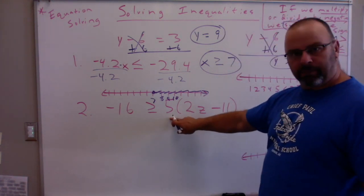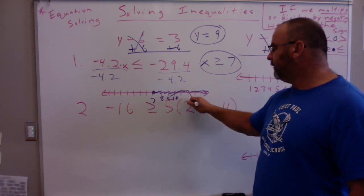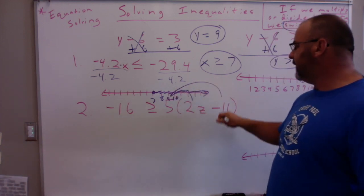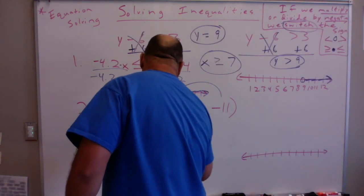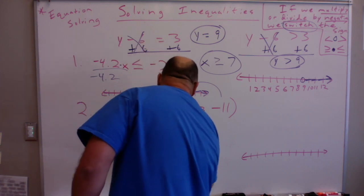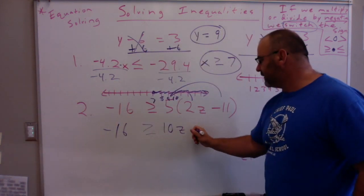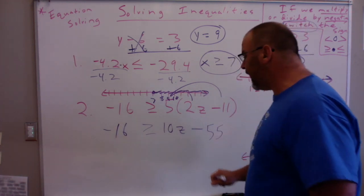I notice I have a five outside the parentheses. So I need to distribute five times this, five times this. So I've got negative 16 is greater than or equal to five times 2z is 10z. And then minus five times 11, which is 55.